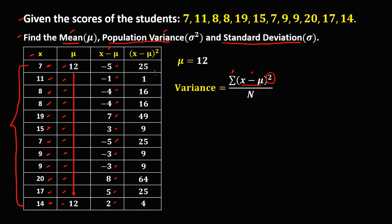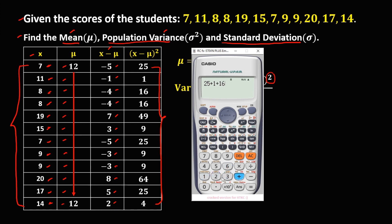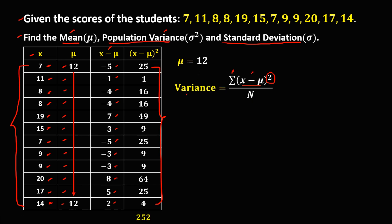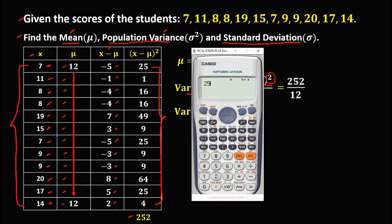Since we have the summation, we add all these numbers: 25 plus 1 plus 16 plus 16 plus 49 plus 9 plus 25 plus 9 plus 9 plus 64 plus 25 plus 4 equals 252. That is the sum of (x minus the mean) squared. To solve for the variance, we substitute: 252 over n, and n is 12, so 252 divided by 12 equals 21. The variance is 21.